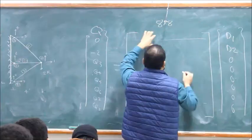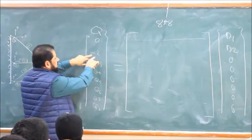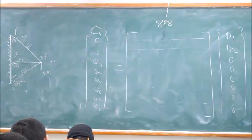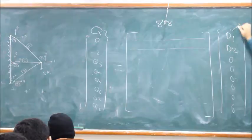The first row times the displacement vector gives one equation with two unknowns: zero equals the first row times D — the first term times D1 plus the second term times D2. Then minus two equals the second row times the displacement vector. So two equations, two unknowns — you should be able to find D1 and D2.